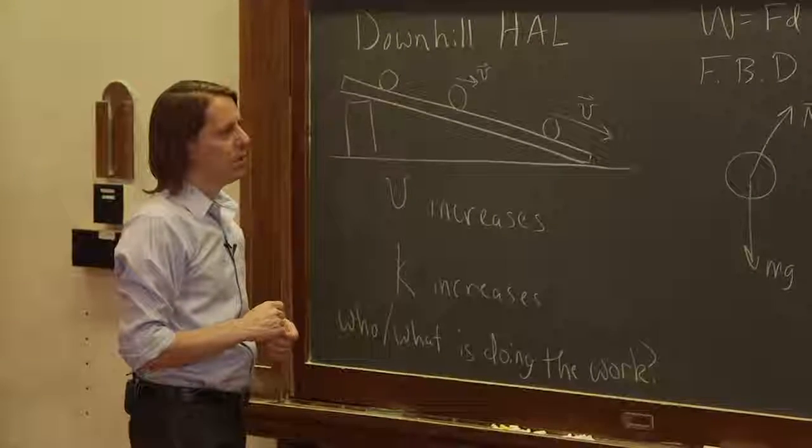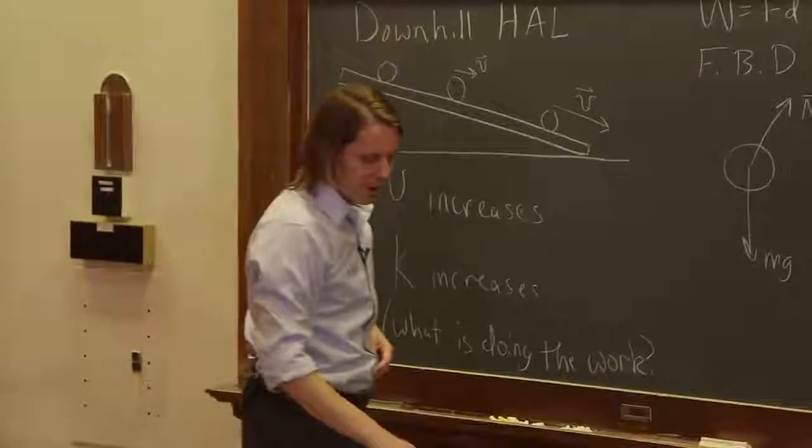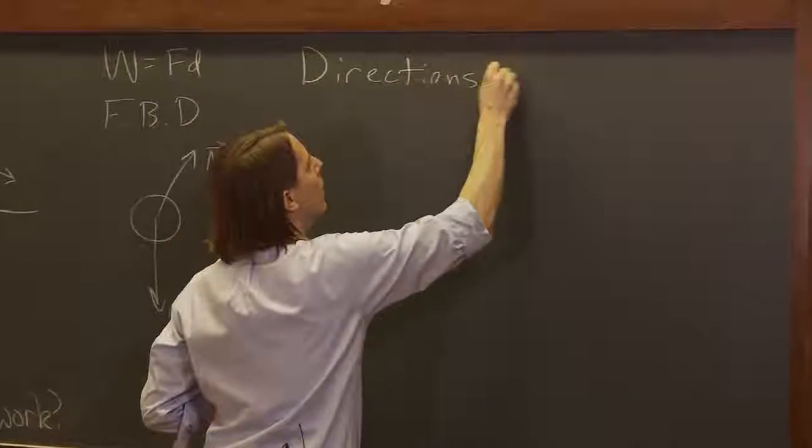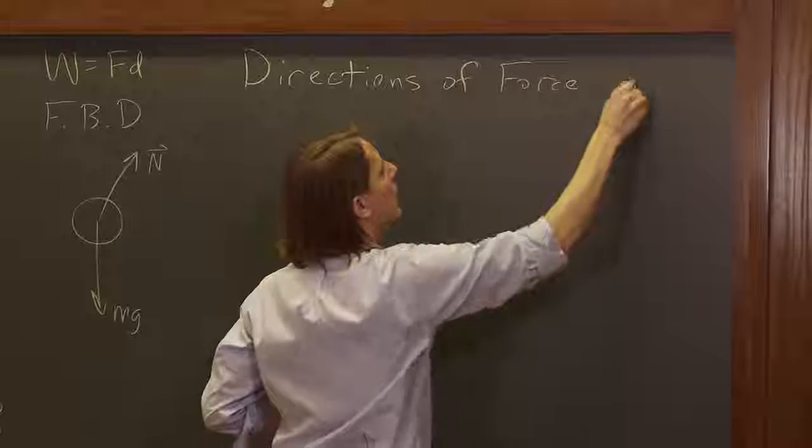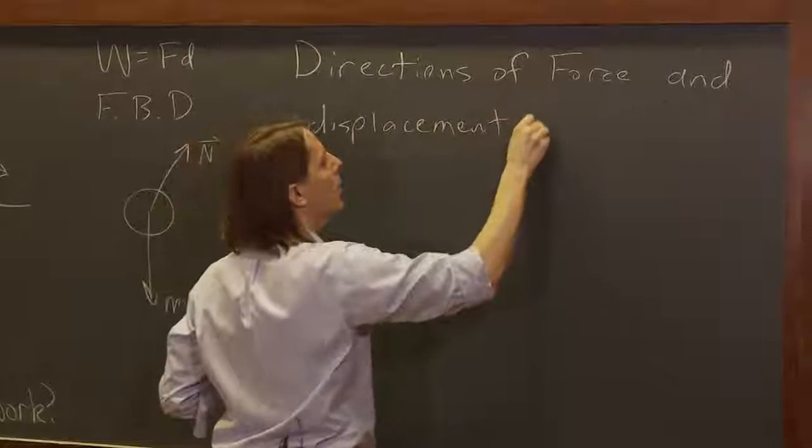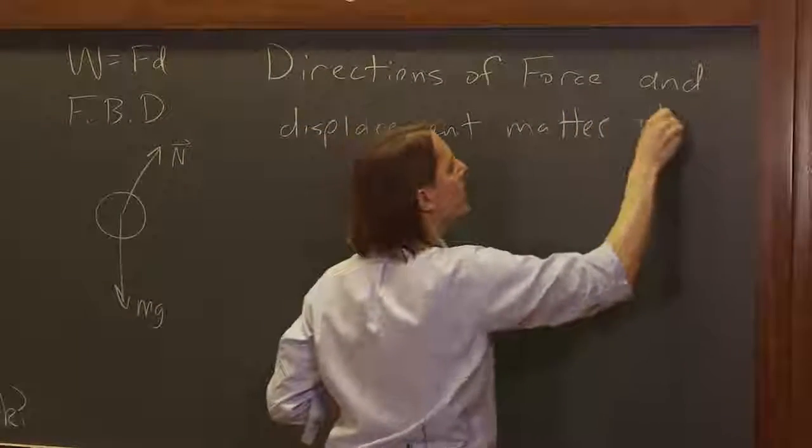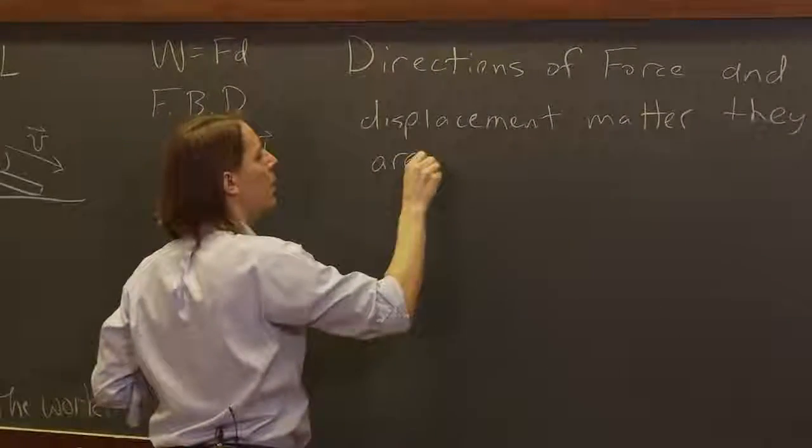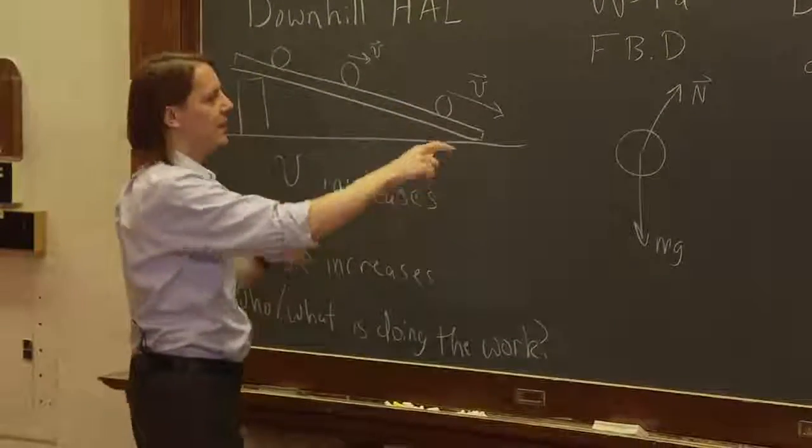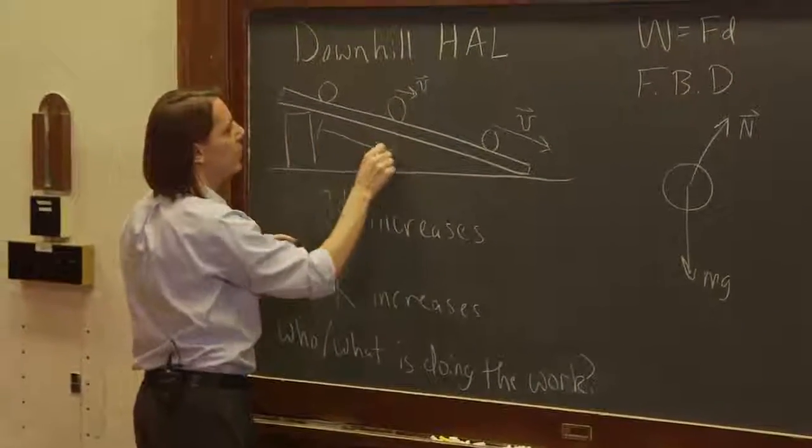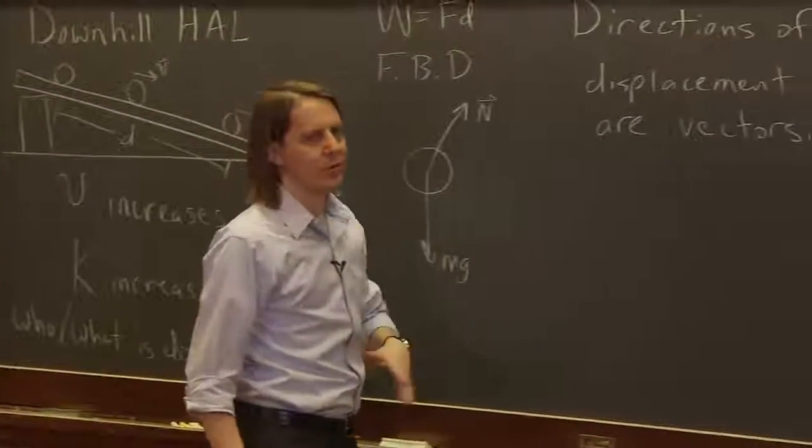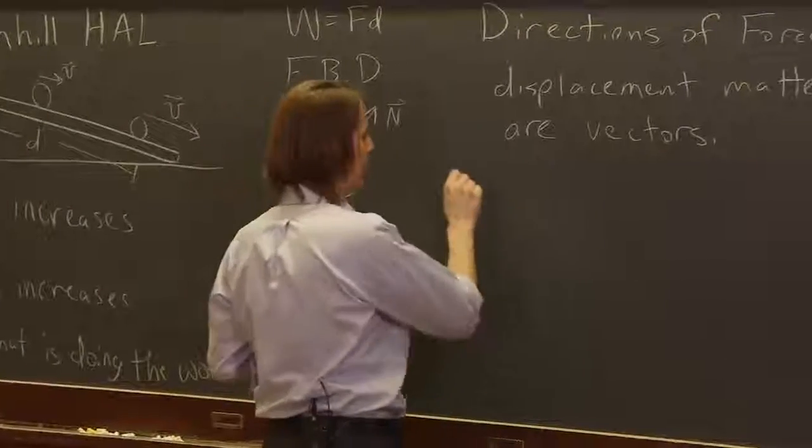But now we want to figure out how much work is being done by each of these forces. So before we go off and write it, we have to remember that the directions of the force and the displacement d matter. Why? Because they are vectors. You don't really just multiply MG times the distance d and N times the distance d. So if we say d is here from the top to the bottom, we have to think a little more carefully. It gets into ways to multiply vectors. But for now, we're just going to give you the formula.